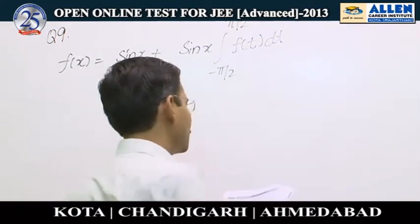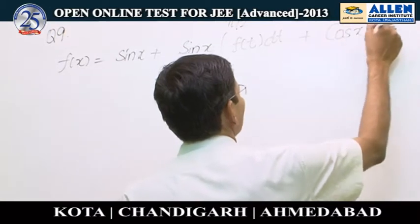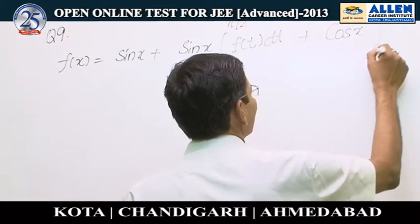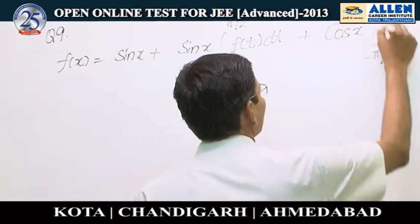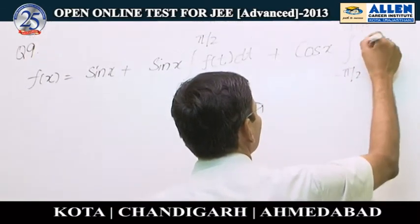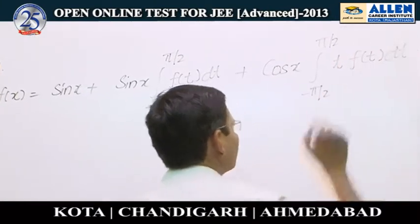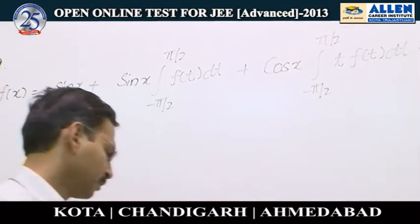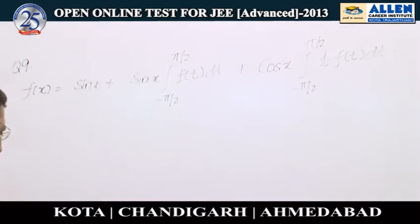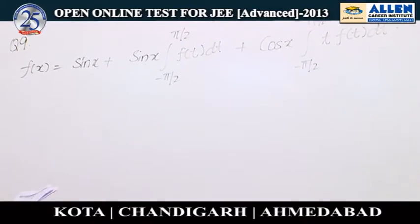And plus the second term, where we can take cos x outside, times the integral from -π/2 to π/2 of t·f(t) dt. As they are saying, it can be expressed as minus 1 upon k times sin x, minus 2 upon k times cos x.